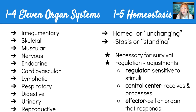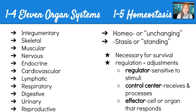We call these homeostatic regulations when the body makes adjustments. In order for those adjustments to happen, there has to be a regulator, there has to be a control center, and there has to be an effector. That regulator responds to or senses stimuli, the control center will then receive and process messages, and the effector is what will basically respond.